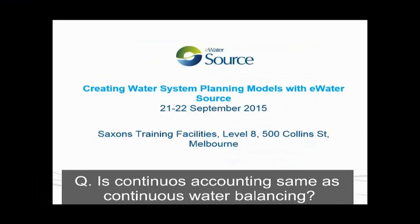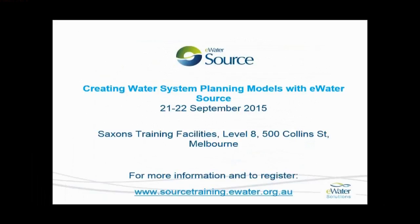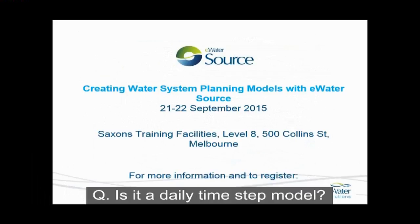Is continuous accounting the same as continuous water balancing? Continuous accounting is a way of maintaining on a continual basis a user's right to water which has been allocated — if the user doesn't use the water in one season they don't lose it; apart from evaporation they maintain continual access to water allocated to them but not yet used. Is it a daily time step model? You get to choose the time step. Often it is used in daily mode but you can choose monthly or sub-daily, depending on the purpose the model is being used for.